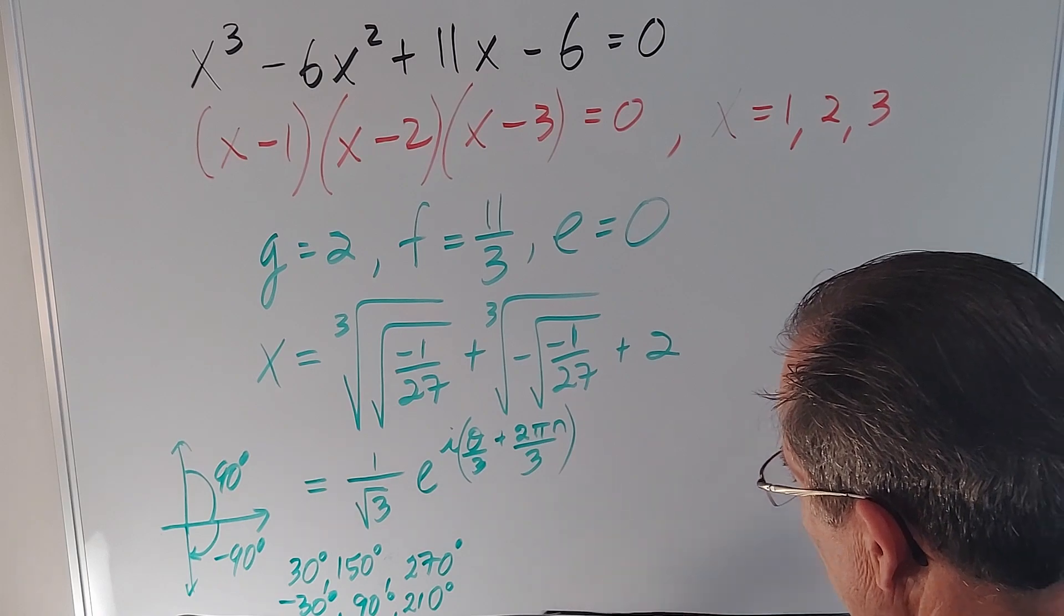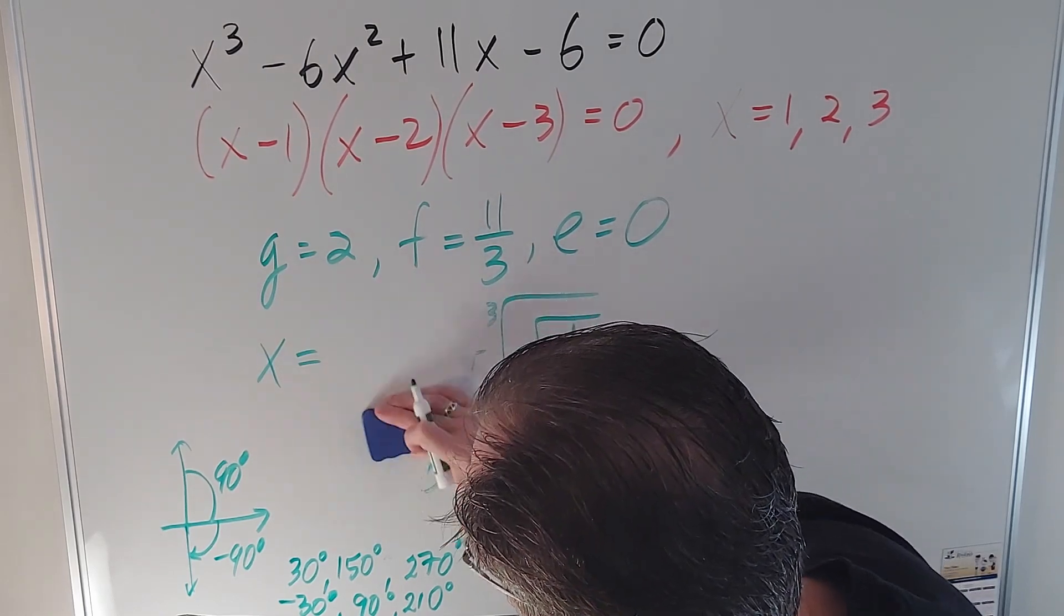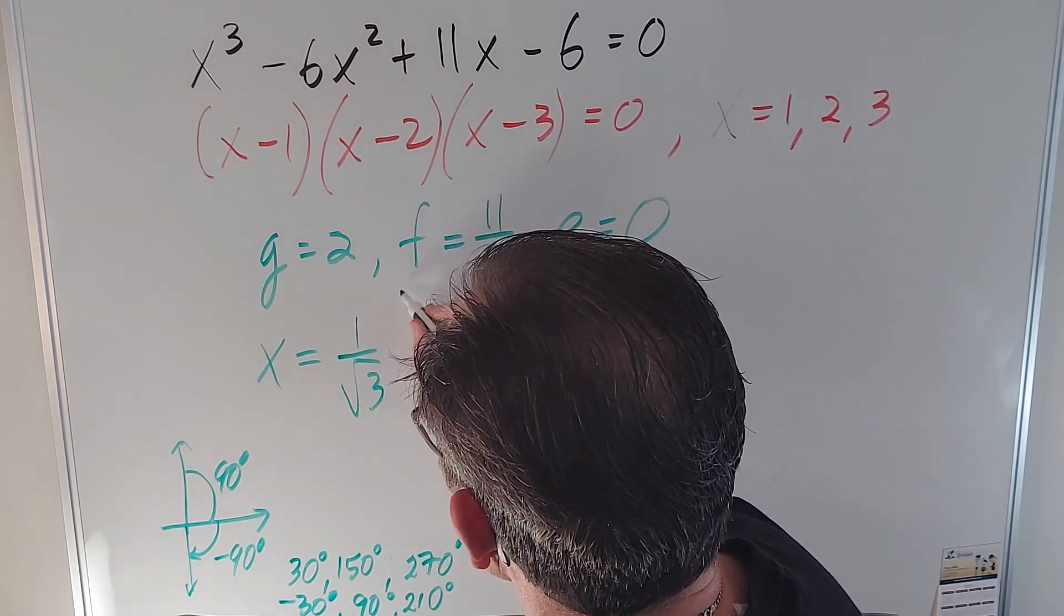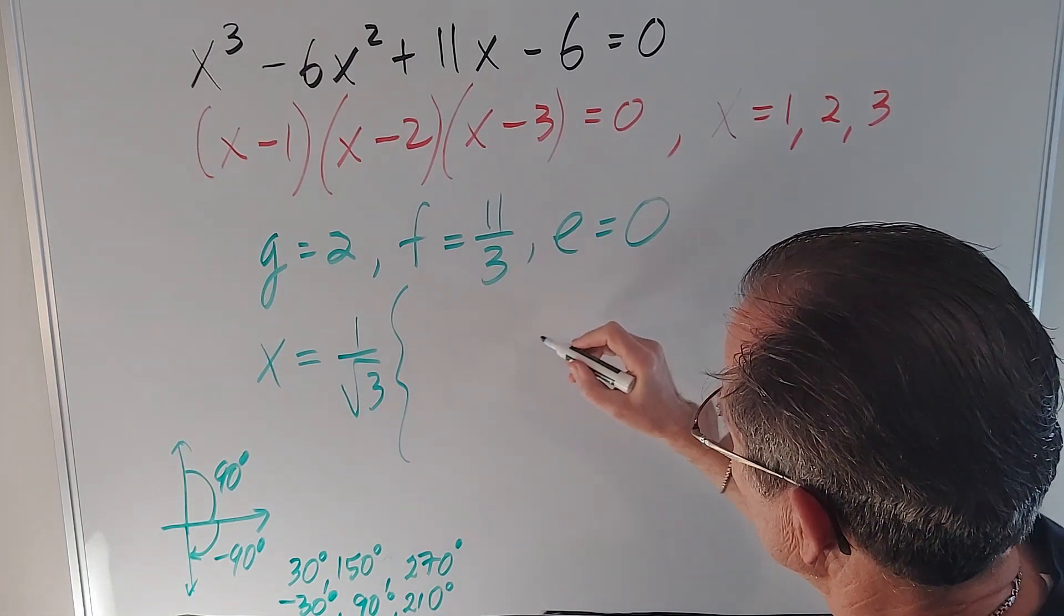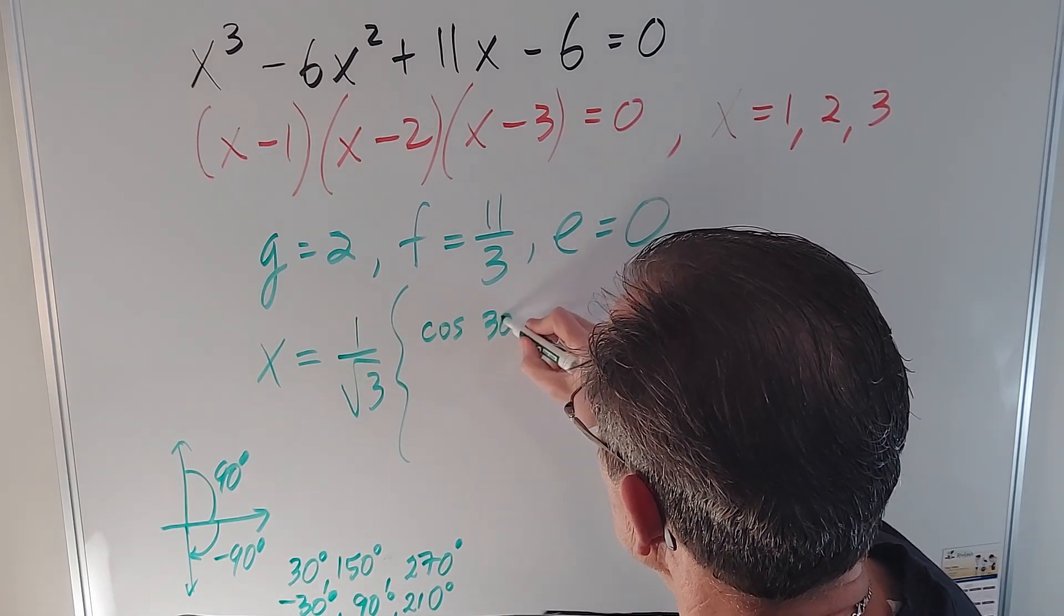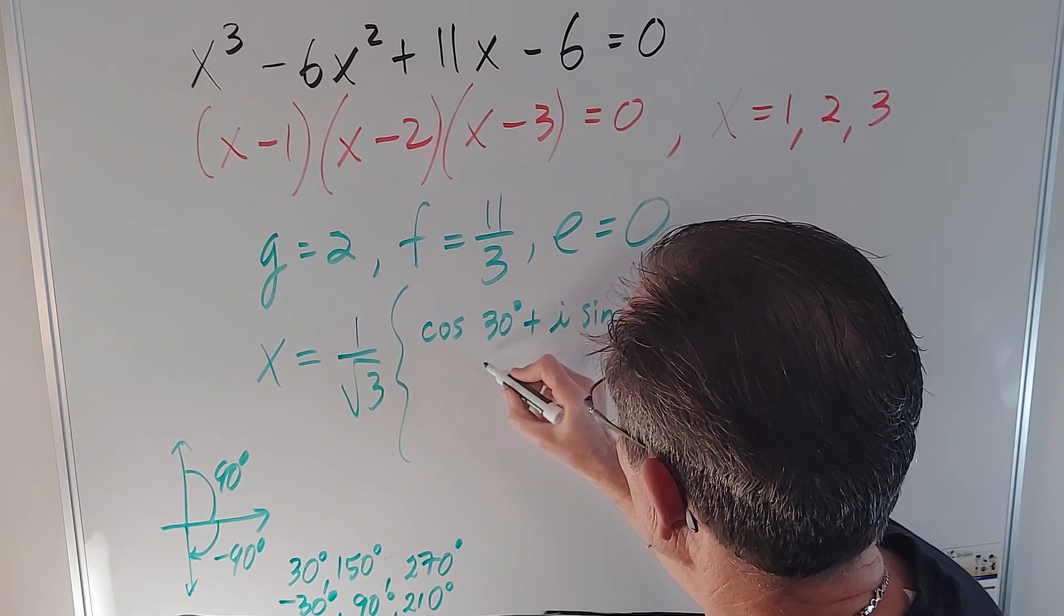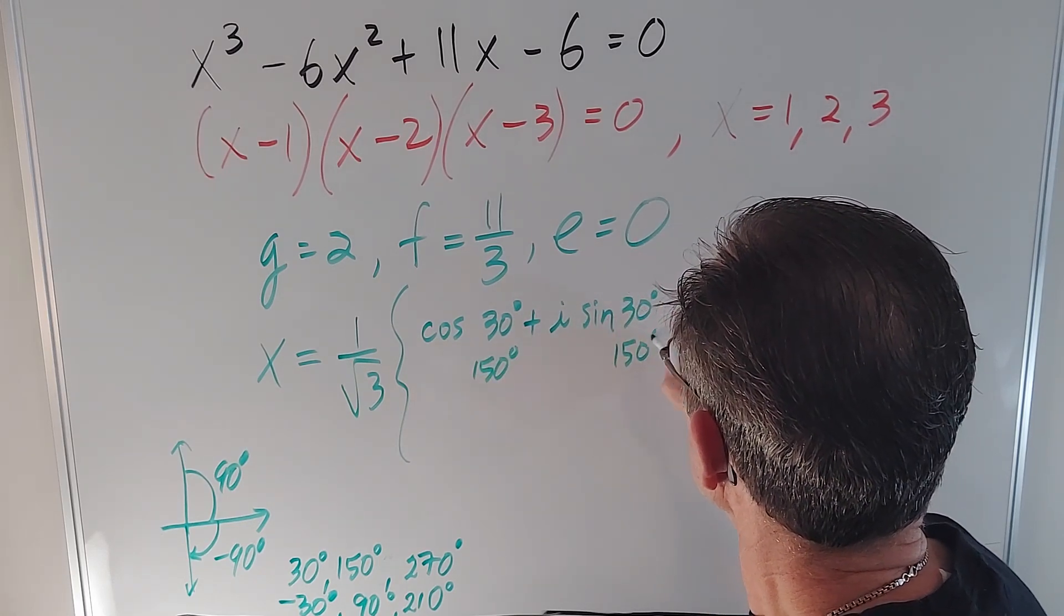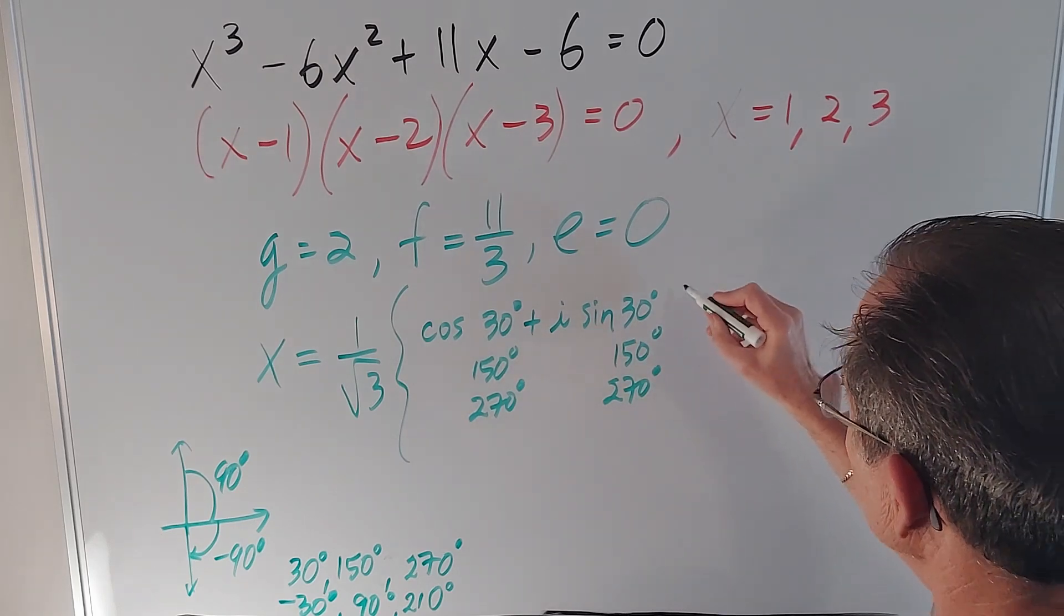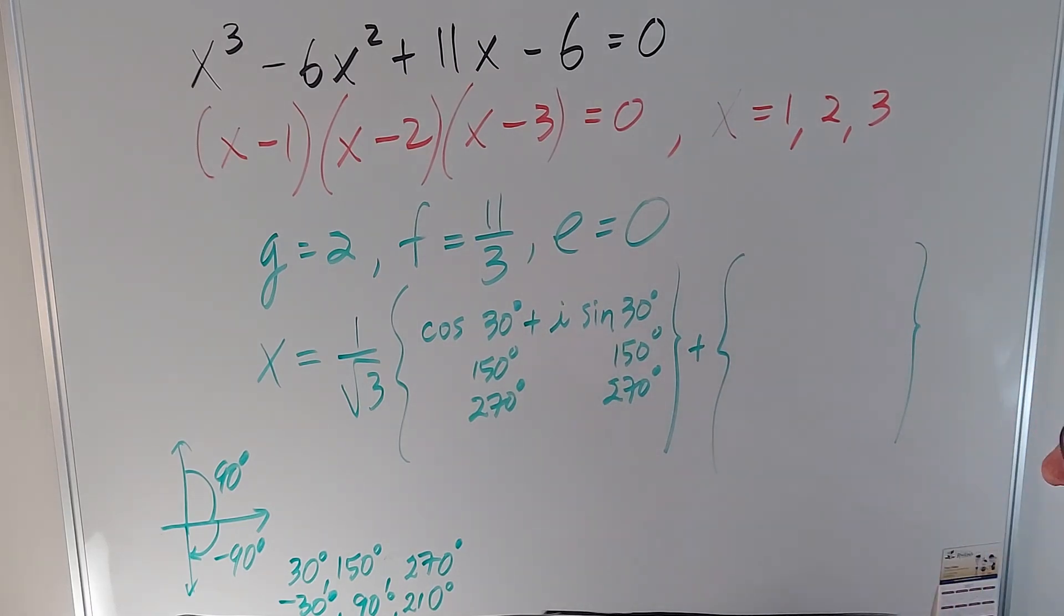So I'm going to calculate the value here. Let me just make some room. We're going to get 1 over root 3 times three possibilities for the first one. So cos 30 degrees plus i sine 30 degrees, and the same thing with 150, and the same thing with 270.